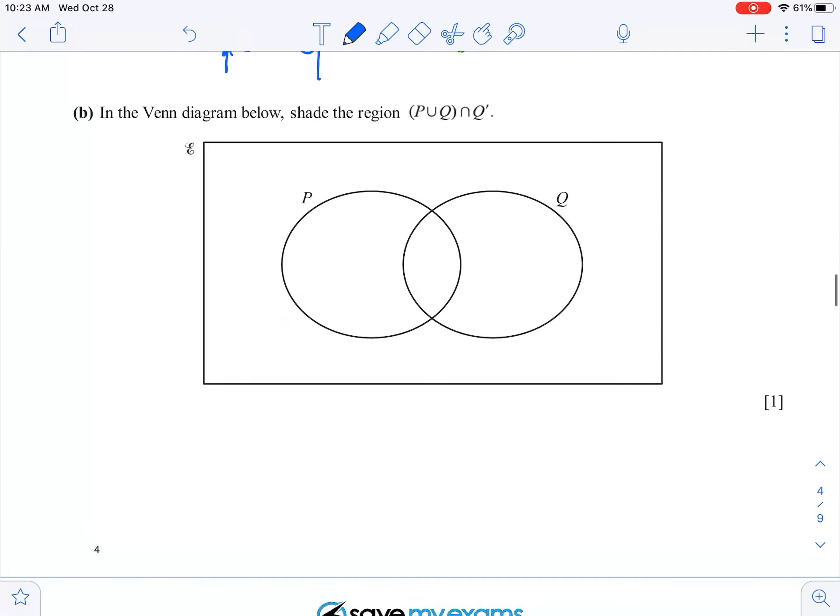Under part B, shade the region of P uniting with Q and then intersecting with not Q. Let's do P uniting with Q first. So P uniting with, joining together with Q. So it's all of that together. All of that, all of that. Everything in here, here and here.